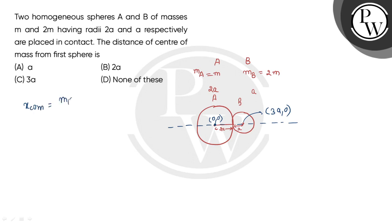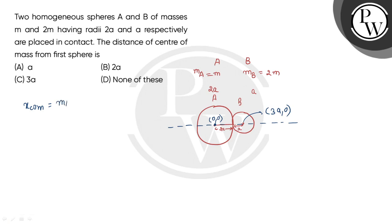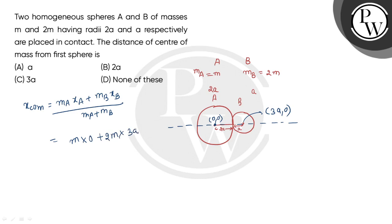Now applying the center of mass formula: Xcm equals M1·X1 plus M2·X2 divided by M1 plus M2. In terms of spheres A and B: mass of A is M with coordinate 0, and mass of B is 2M with coordinate 3A. So Xcm equals M times 0 plus 2M times 3A, divided by M plus 2M.